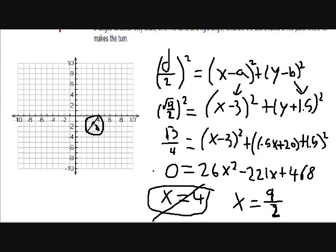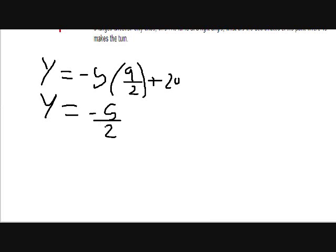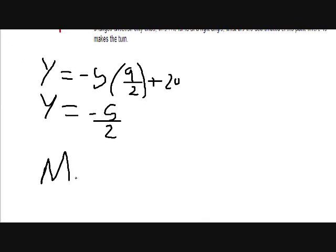We take the first equation and substitute y into the second equation. We expand the brackets to get a quadratic formula. Solving the quadratic gives two roots: x equals 4 and x equals 9 over 2. We cannot use x equal to 4, however, because that is already one of the points. So we use 9 over 2. Finally, take x equals 9 over 2 and substitute it back into the original equation to solve for y. You get y equals negative 5 over 2. That is the point.